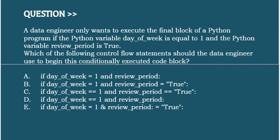Next question: A data engineer only wants to execute the final block of a Python program if the Python variable 'day_of_week' is equal to 1 and the Python variable 'review_period' is true. Which of the following control flow statements should the data engineer use to begin this conditionally executed code block?